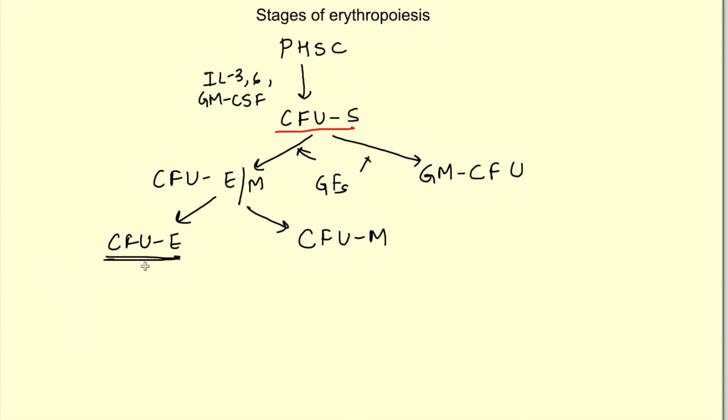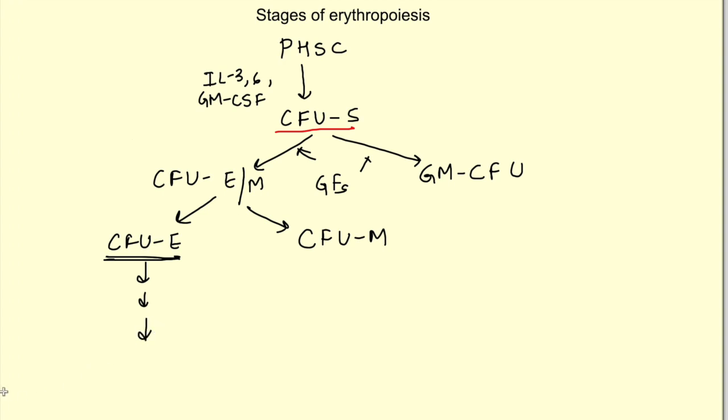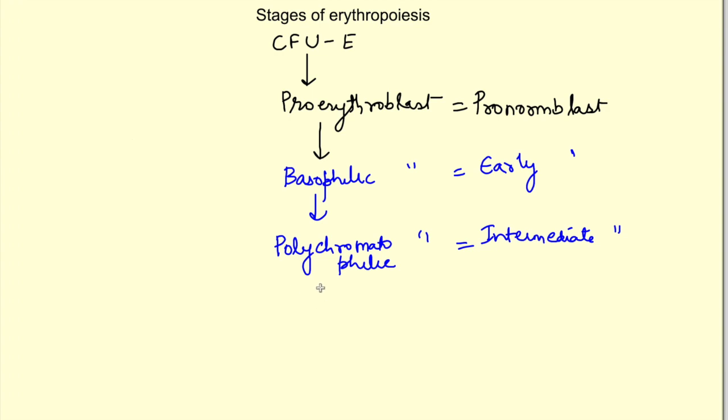CFU-E further differentiates into various stages. First stage is proerythroblast or pronormoblast. Then basophilic erythroblast or early normoblast. Then polychromatophil erythroblast or intermediate normoblast. Then orthochromatic erythroblast or late normoblast. And finally reticulocyte formation. This reticulocyte enters into blood and matures into RBCs.